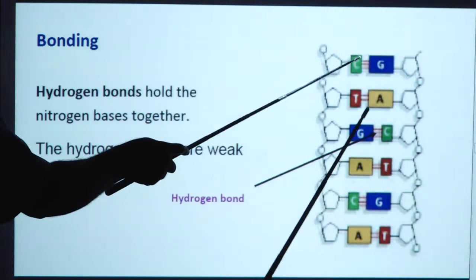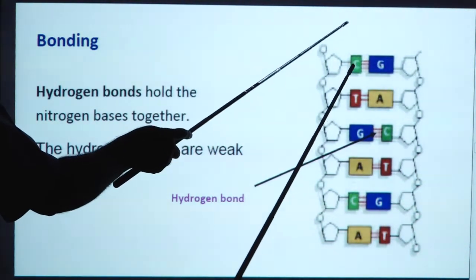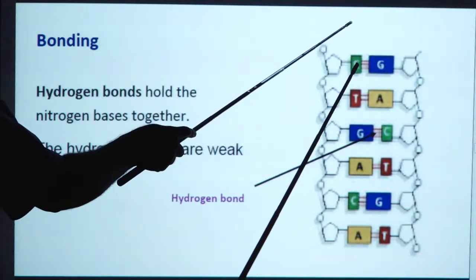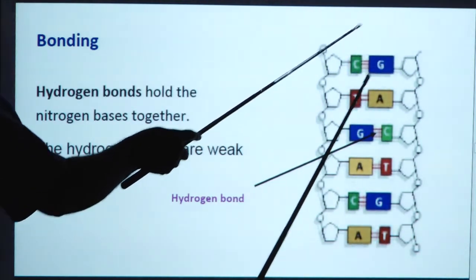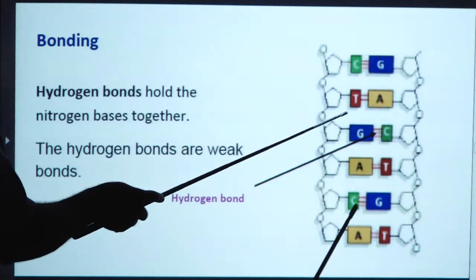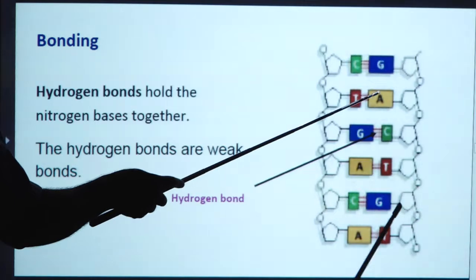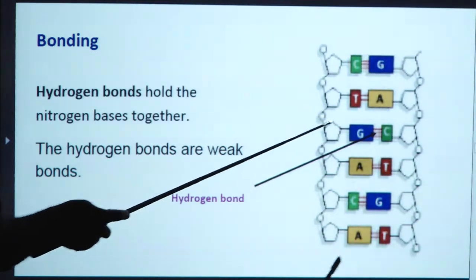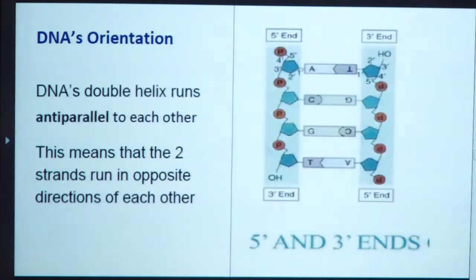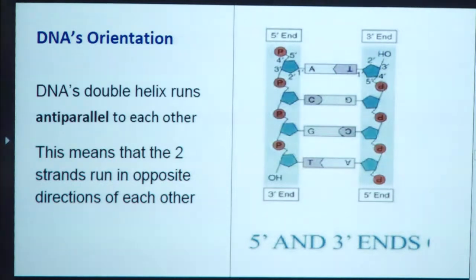These are the different nitrogenous bases bonded with hydrogen bonds: cytosine bonded with guanine, thymine bonded with adenine, guanine bonded with cytosine, adenine bonded with thymine, and cytosine bonded with guanine again. DNA's double helix runs antiparallel — the two strands run in opposite directions of each other.